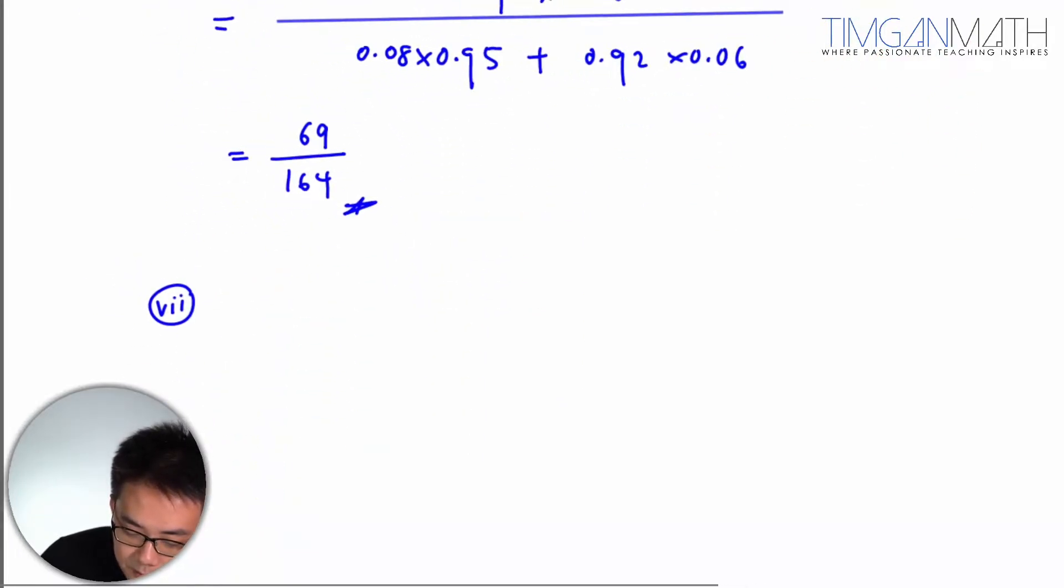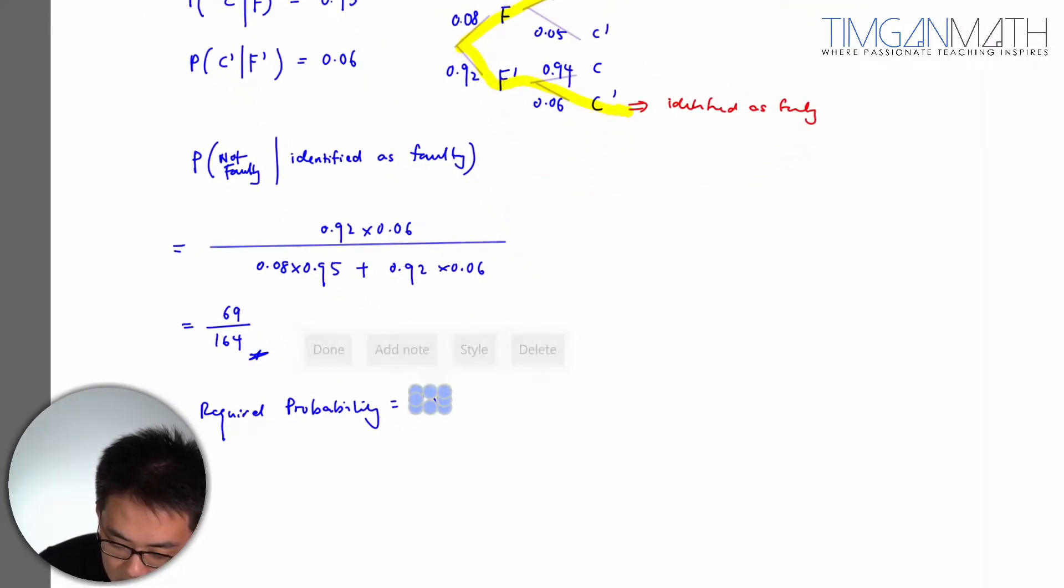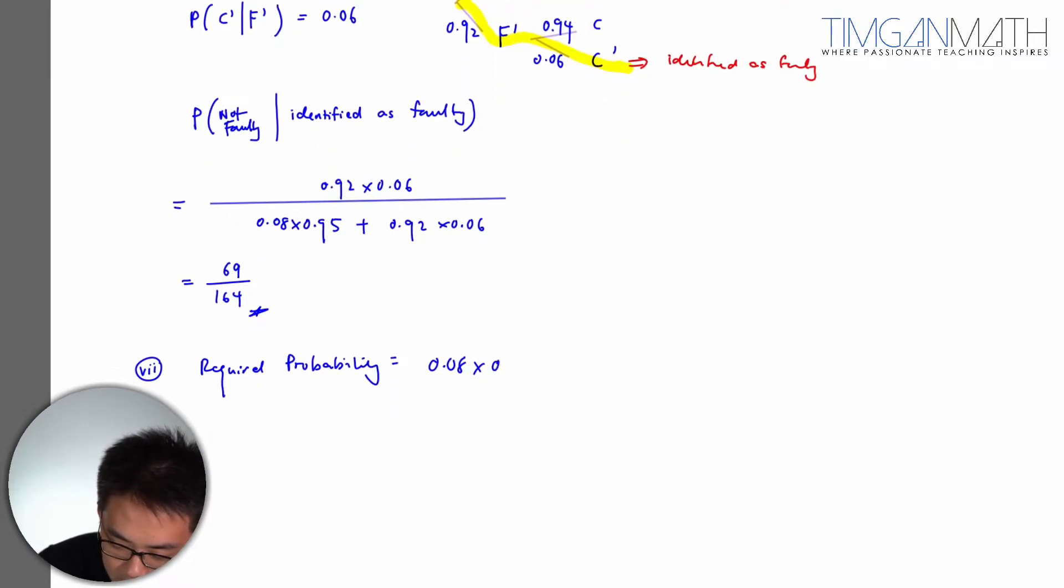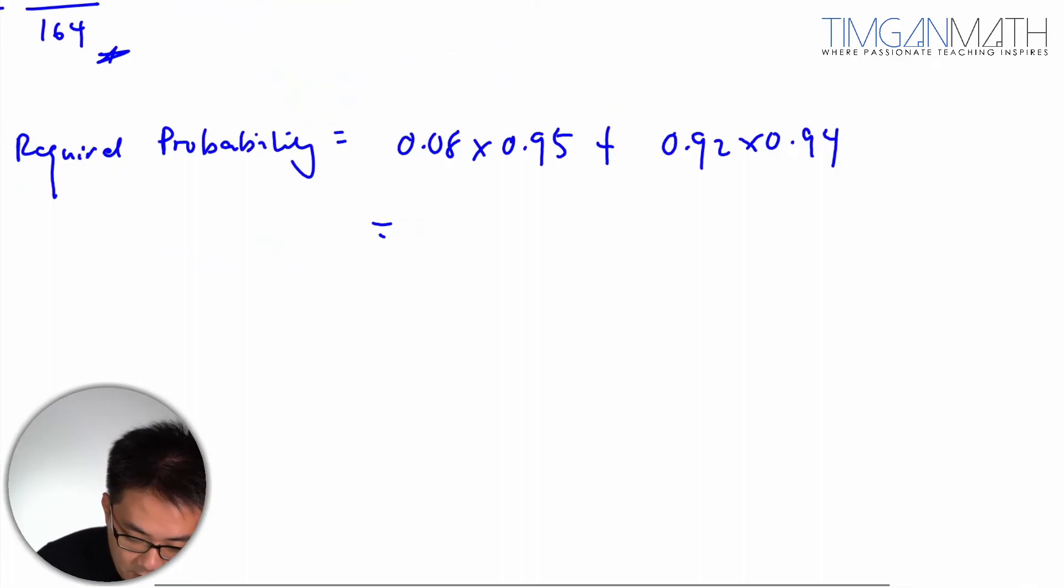It would just be faulty and correct, just be correct about it. So this is 0.08 multiplied with 0.95 plus 0.92 times 0.94. So what we're going to get is 0.08 times 0.95 plus 0.92 times 0.94, which is actually 588 over 625.